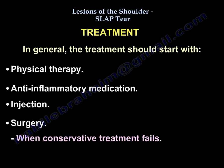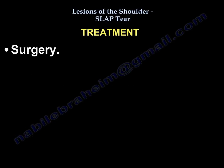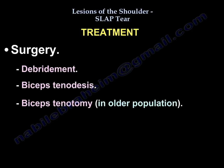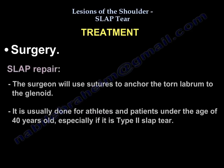In general, treatment should start with physiotherapy, anti-inflammatory medication, and injections. Surgery is done when conservative treatment fails. Surgery can be debridement, biceps tenodesis, or biceps tenotomy in the older population. Another procedure is SLAP repair, where the surgeon uses sutures to anchor the torn labrum to the glenoid. This is usually done for athletes and patients under 40 years old, especially for type 2 SLAP tears.